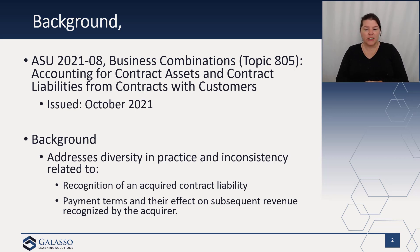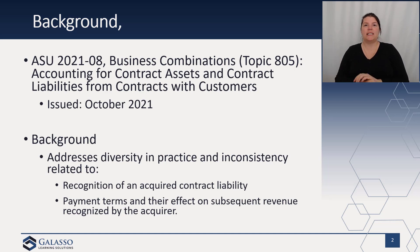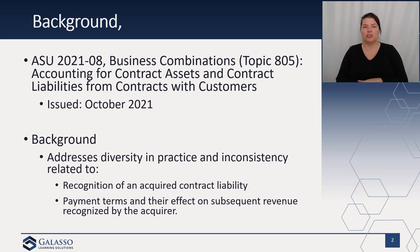As a result, many people asked questions and wanted some additional guidance on how to measure these contracts. Topic 606 is a performance obligation approach — with the timing of revenue, you recognize revenue over the estimated contract. So for some of these contract assets and contract liabilities, what are we going to do?